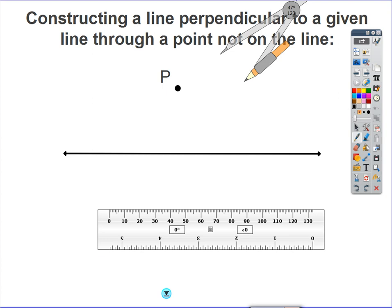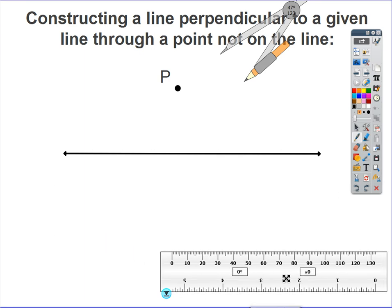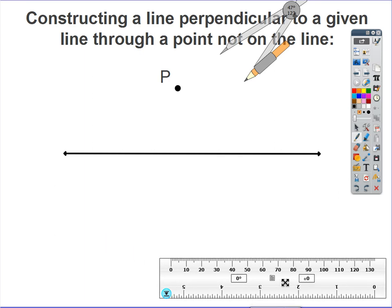This video is on constructing a line perpendicular to an already given line that's passing through a point P that is not on my line. We're going to use our straight edge and compass to complete this geometric construction.